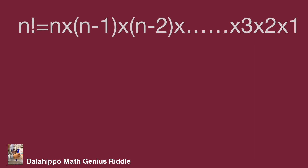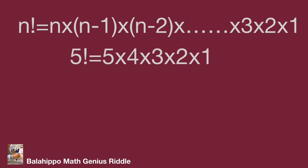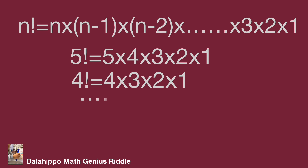n factorial equals n times (n minus 1) times (n minus 2), continuing down to 3 times 2 times 1. For example, 5 factorial equals 5 times 4 times 3 times 2 times 1, and 4 factorial equals 4 times 3 times 2 times 1. Also, 1 factorial equals 1, and by definition 0 factorial equals 1.